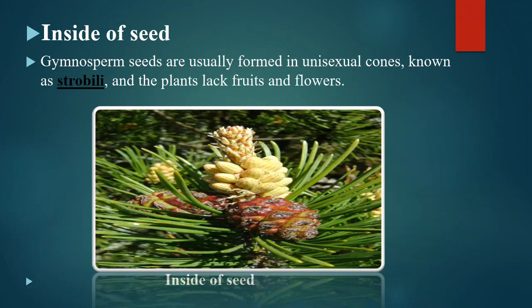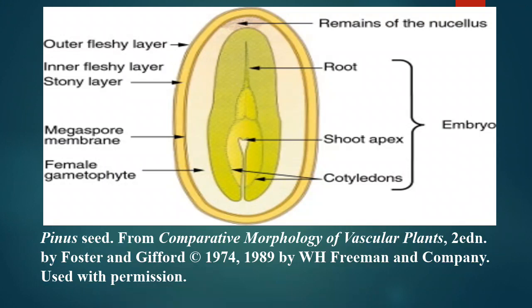Inside of seed: gymnosperm seeds are usually formed in unisexual cones known as strobili; the plants lack fruit and flowers. You can observe here a pinus seed showing the outer fleshy layer, inner fleshy layer, stone layer, megaspore membrane, female gametophyte, root, shoot apex, cotyledon, and embryo.